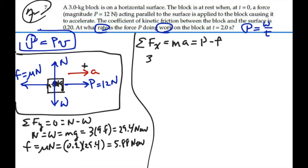In other words, 3 times a is going to equal 12 newtons minus 5.88 newtons. Or a is going to equal 6.12 divided by 3, or 2.04 meters per second squared.